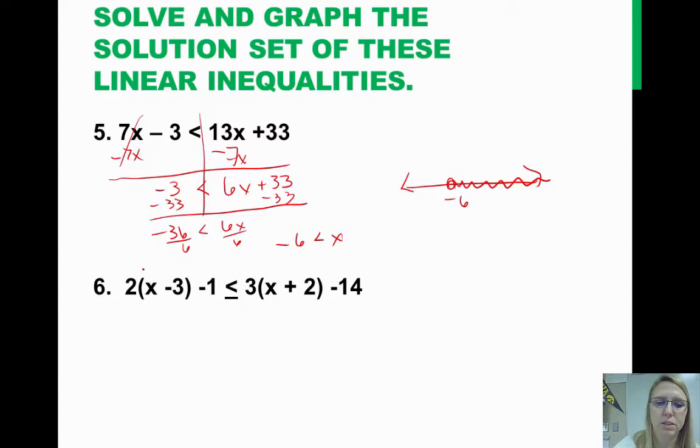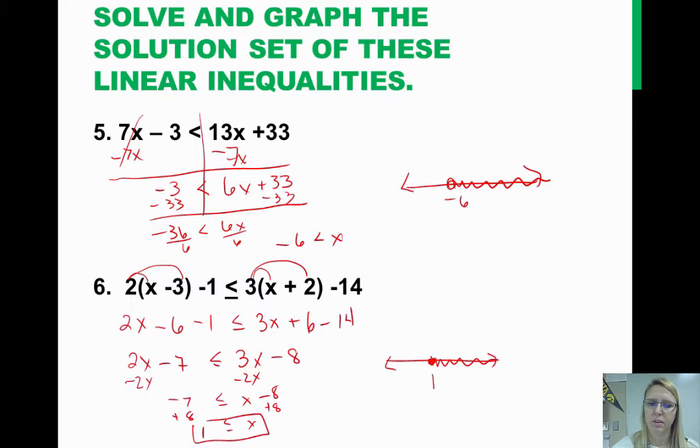On number 6, we need to distribute first. So once you distribute, then you can put together like terms. Why don't you stop the video here and see if you can do this one on your own and check back in a minute. Okay, so once you distribute this, you get 2x minus 6 minus 1 is less than or equal to 3x plus 6 minus 14. If you combine like terms on both sides, so we have 2x minus 7 and then 3x minus 8, and then get your variables to one side, you should end up with 1 is less than x. So you have a solid dot at 1, and it's going to the right.